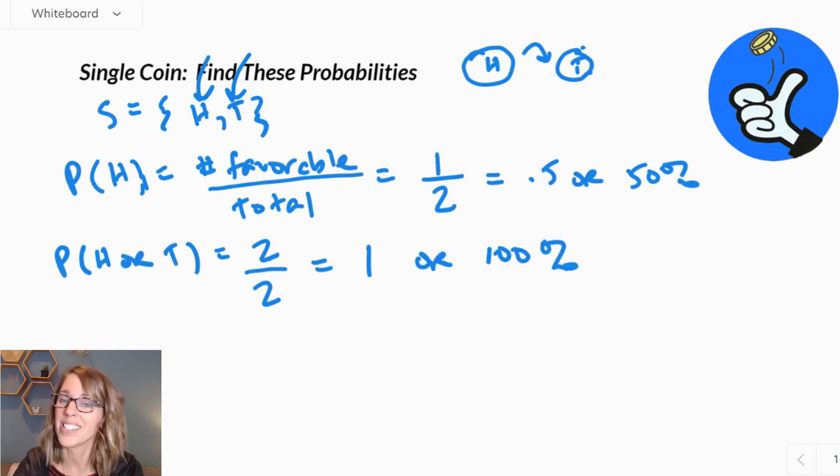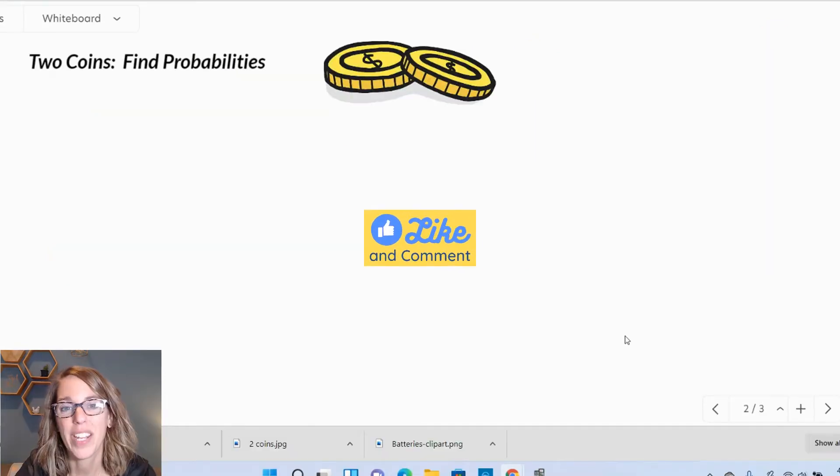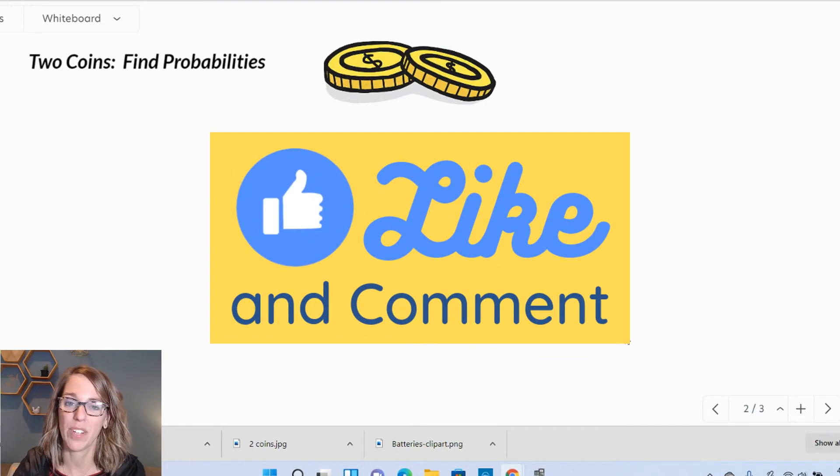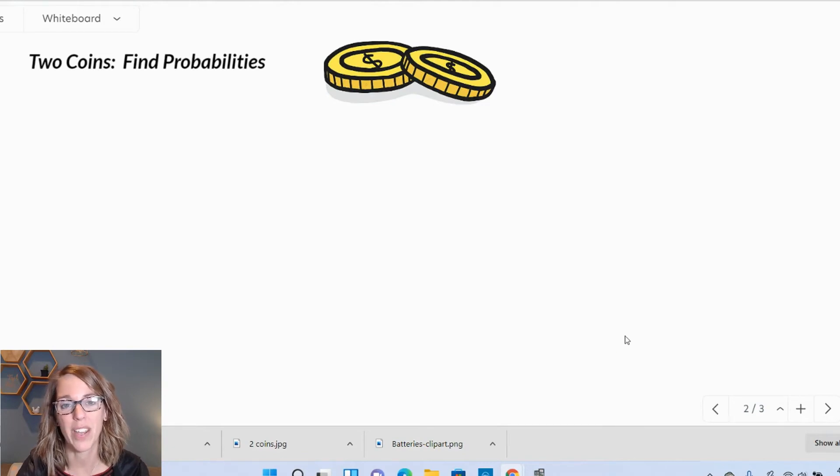Let's move into two coins, where it gets just a little more complicated, and then we'll even take a look at three coins. Before we get into our two coin example, please take just a minute and click like if this video is helpful for you. I also encourage any comments or questions that you've got for me down below. Let's go ahead and continue.